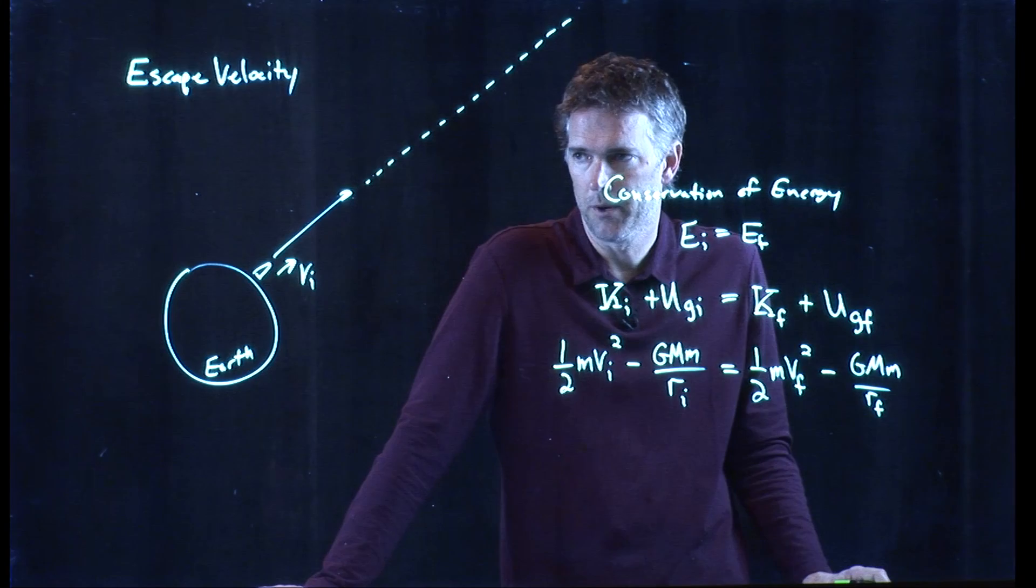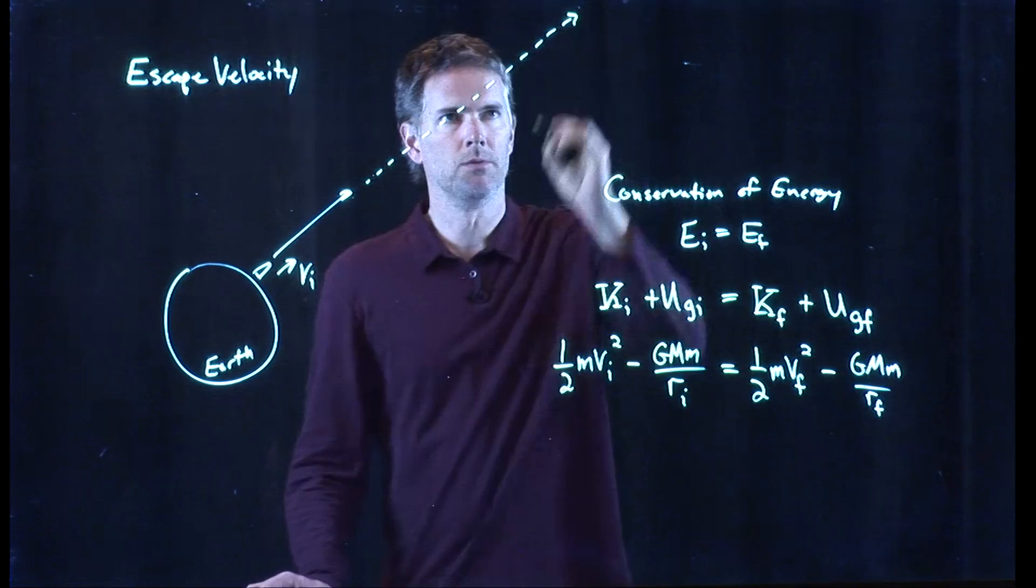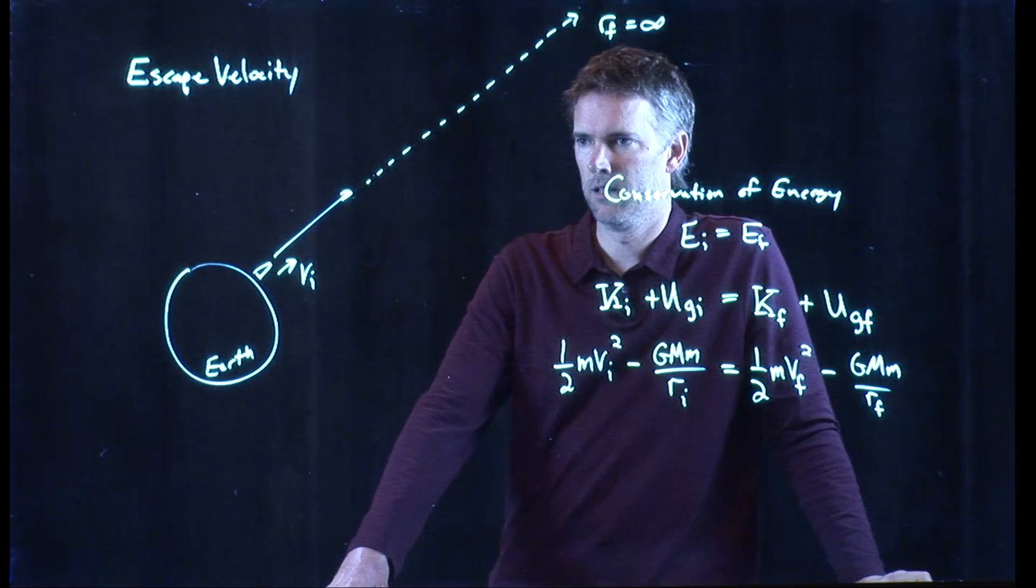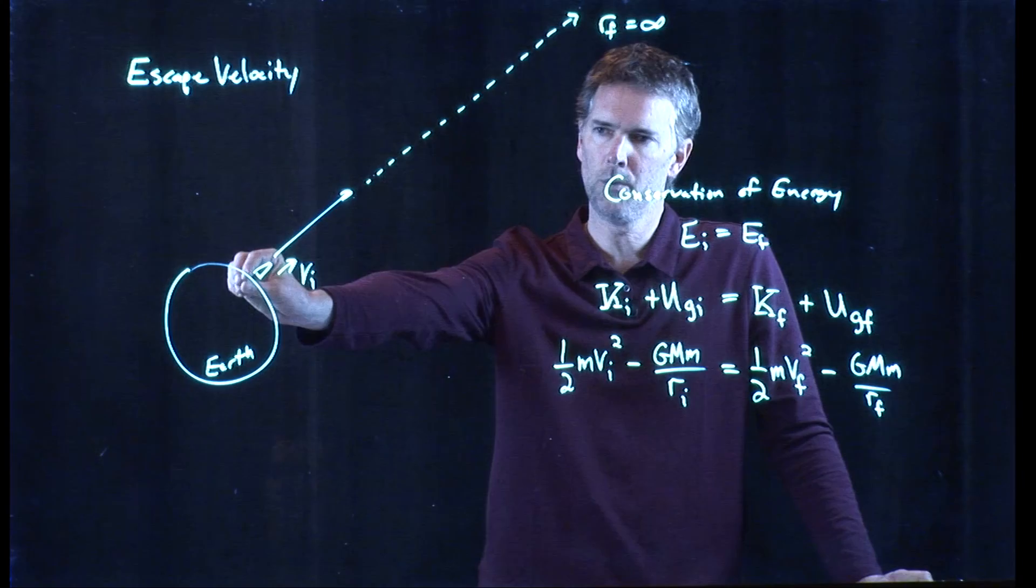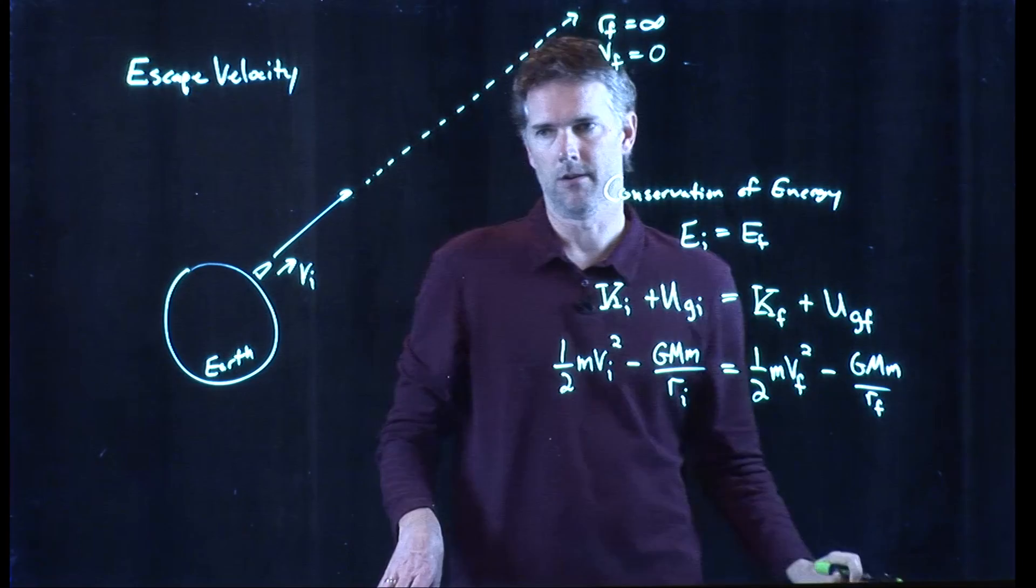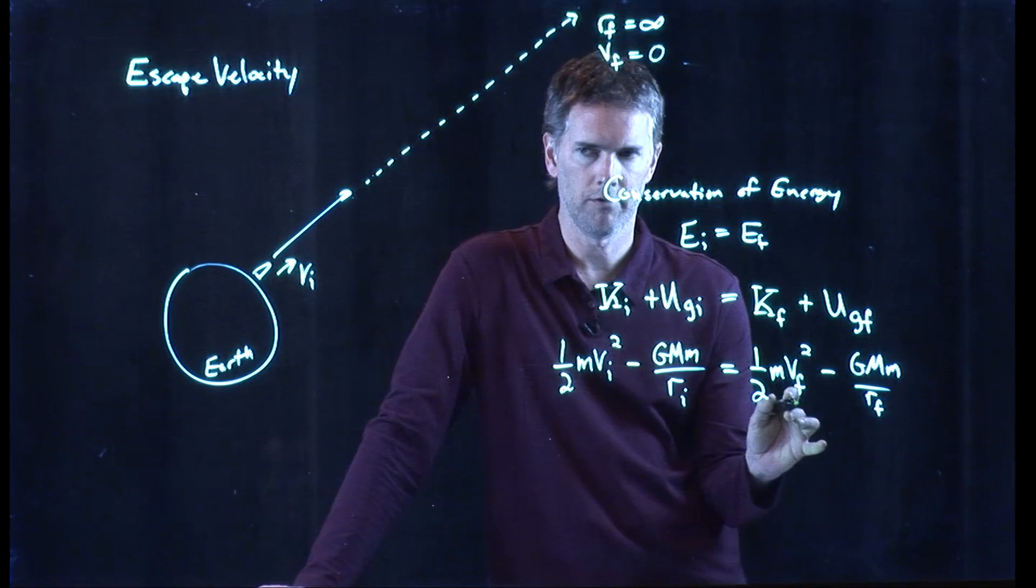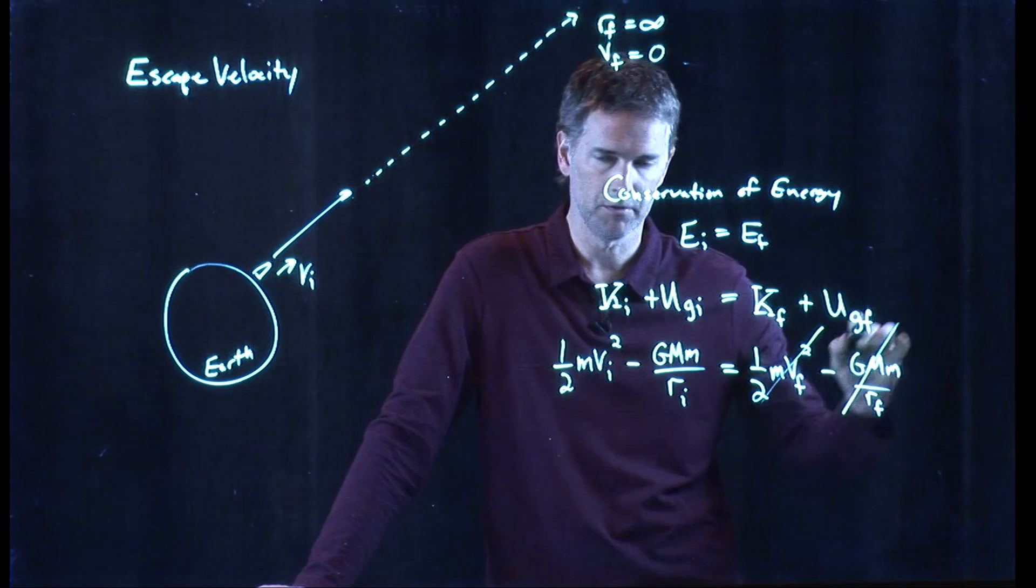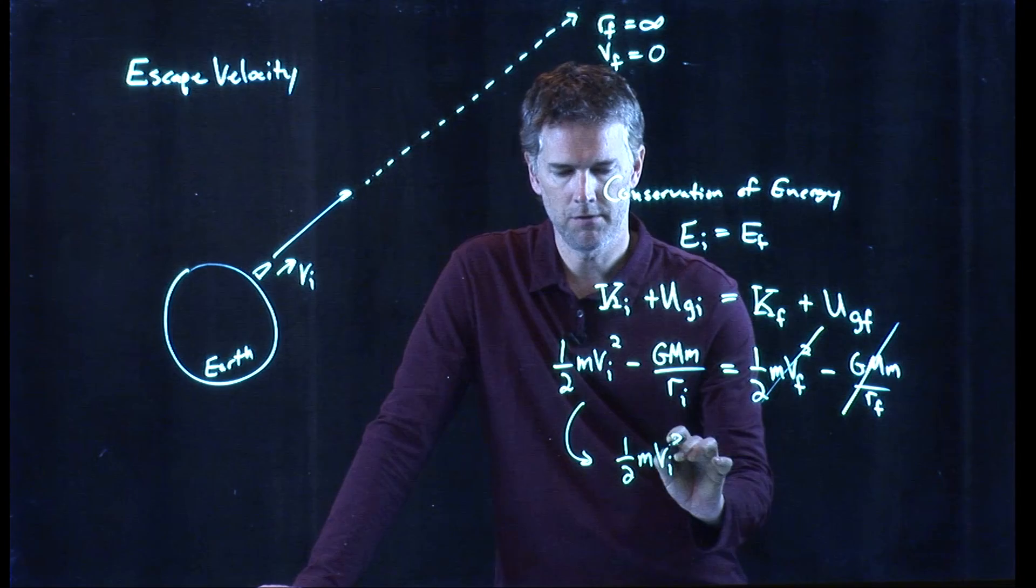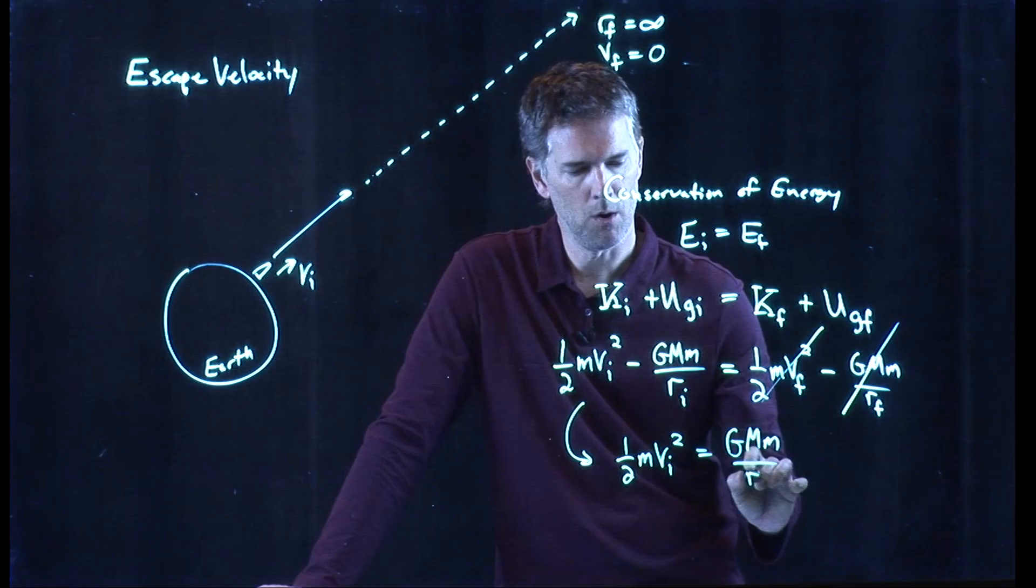And now this is where we're going to make some simplifying assumptions. Let's say that when we get out to this distant place, it is so far away that we can call it infinity. RF equals infinity. And we're looking for the smallest amount of speed we have to launch this projectile with, which means we don't want any excess speed at the end. So V final is zero. And if that is the conditions for this, look what happens. This term is going to drop out. And this term is going to drop out because we put RF equal to zero. And so now we get a nice new relationship here, which is the following.